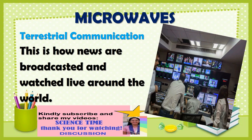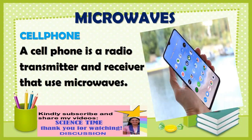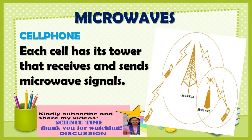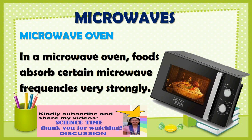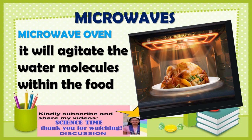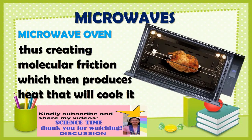This is how news is broadcasted and watched live around the world. A cell phone is a radio transmitter and receiver that uses microwaves. Cellular phones depend on overlapping networks of cells or areas of land several kilometers in diameter. Each cell has its tower that receives and sends microwave signals. In a microwave oven, foods absorb certain microwave frequencies very strongly. The microwaves penetrate the food being heated, agitating the water molecules within the food, creating molecular friction which then produces heat that cooks it.